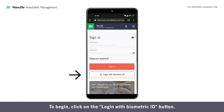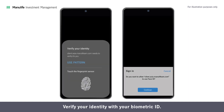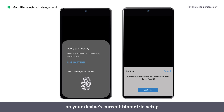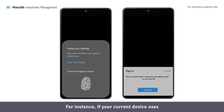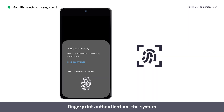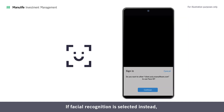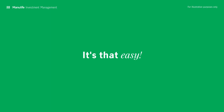To begin, click on the Login with Biometric ID button. Verify your identity with your biometric ID. You may see a varying interface depending on your device's current biometric setup and operating system. For instance, if your current device uses fingerprint authentication, the system will ask for your fingerprint. If facial recognition is selected instead, then the system will ask for the same authentication. It's that easy.